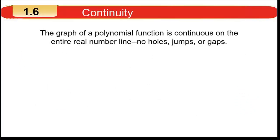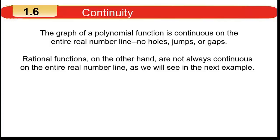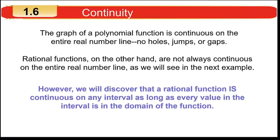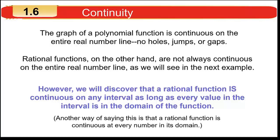A polynomial function is continuous everywhere — there will never be a hole, jump, or gap. A rational function, on the other hand, is a ratio of two polynomials (one polynomial divided by another), and those can have values where the function is not defined. A rational function is continuous on any segments around its discontinuities, at every number in its domain. You do have to skip any discontinuities when listing the intervals where the function is continuous.